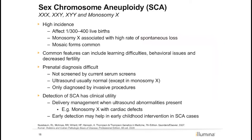In contrast to the three autosomal trisomies just described, sex chromosome aneuploidies are less severe and often may go undetected during pregnancy and in the newborn period. Fetuses with sex chromosome abnormalities do not typically have ultrasound findings. Also, prior to NIPT, there were no traditional serum screening methods that screen for these sex chromosome aneuploidies. Sex chromosome aneuploidies — including monosomy X, XXY, XXX, and XYY — collectively have an incidence of 1 in 300 to 1 in 400 births. The most common features are learning and behavioral difficulties and fertility problems, though these can be quite variable. Arguments can be made that early detection can help with delivery management and early childhood interventions to address common delays.